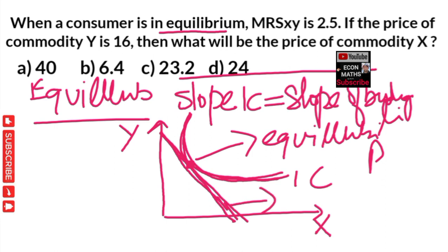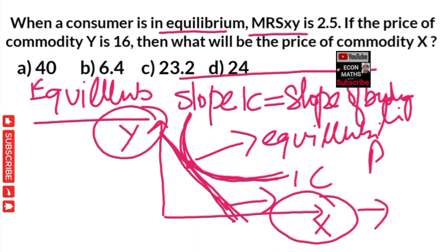The marginal rate of substitution is defined as the rate at which a consumer is ready to exchange a number of units of good X for one more unit of good Y, at the same level of utility.